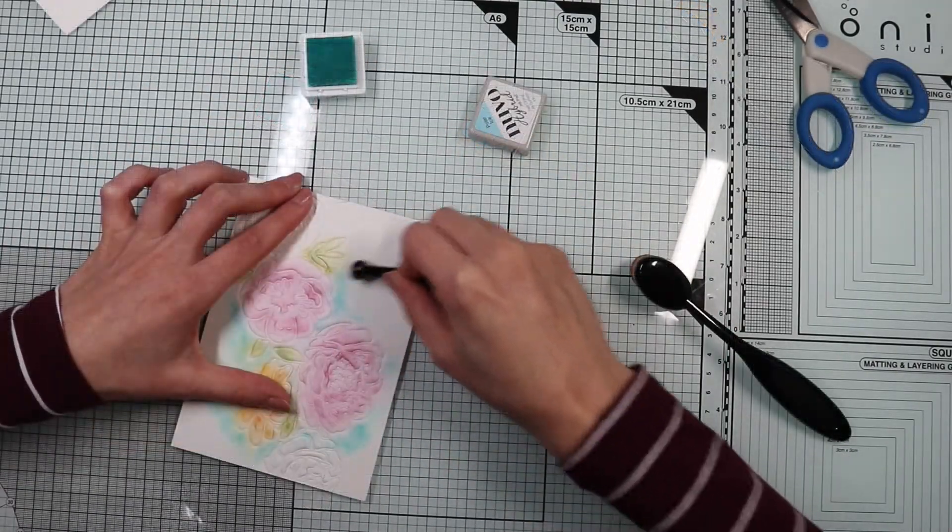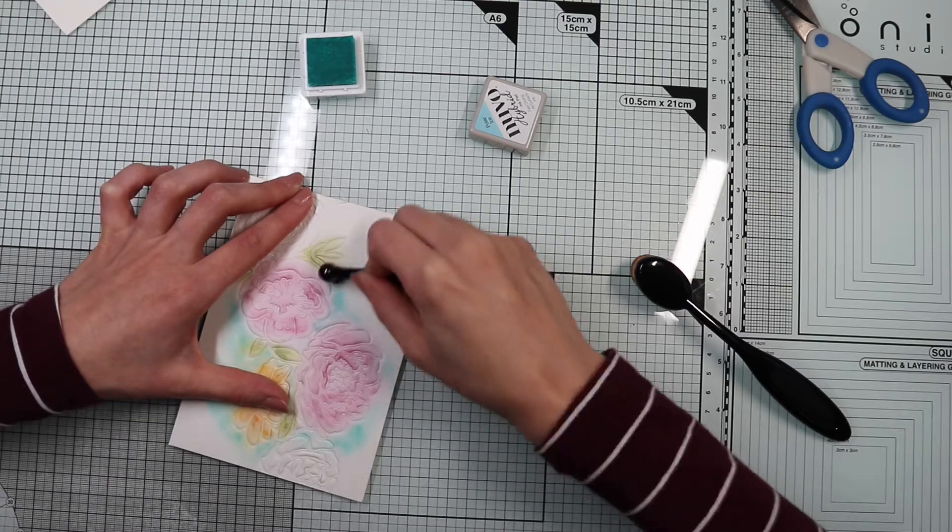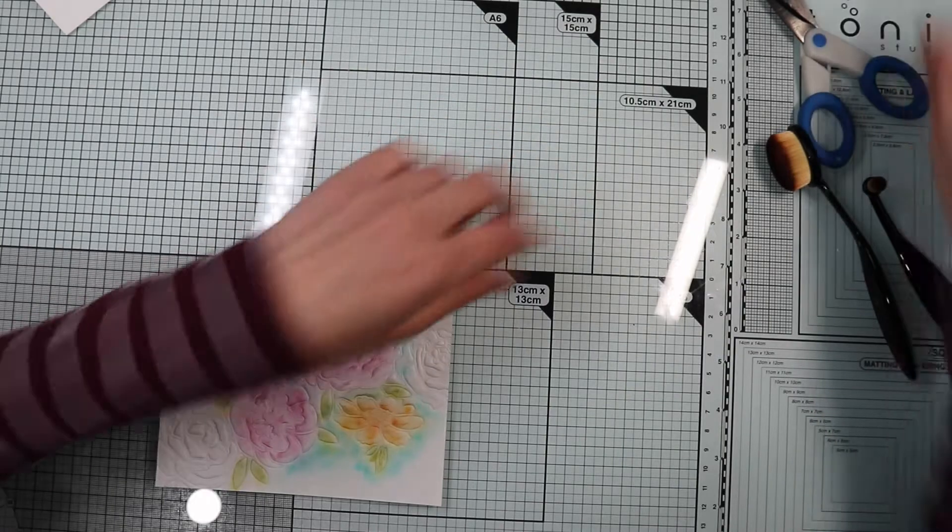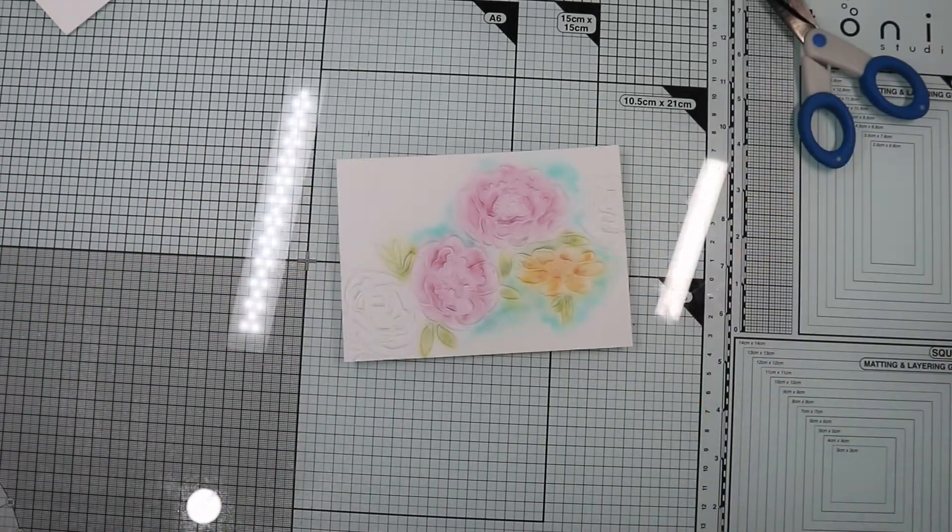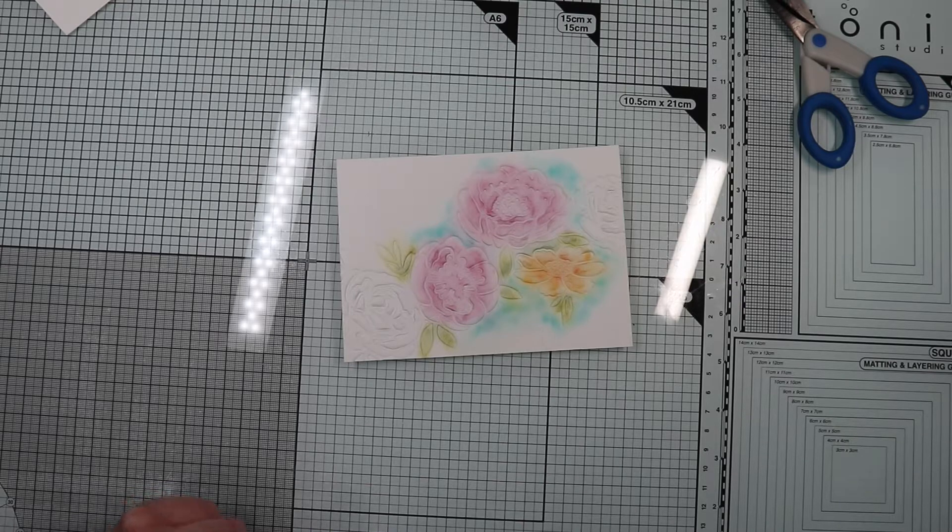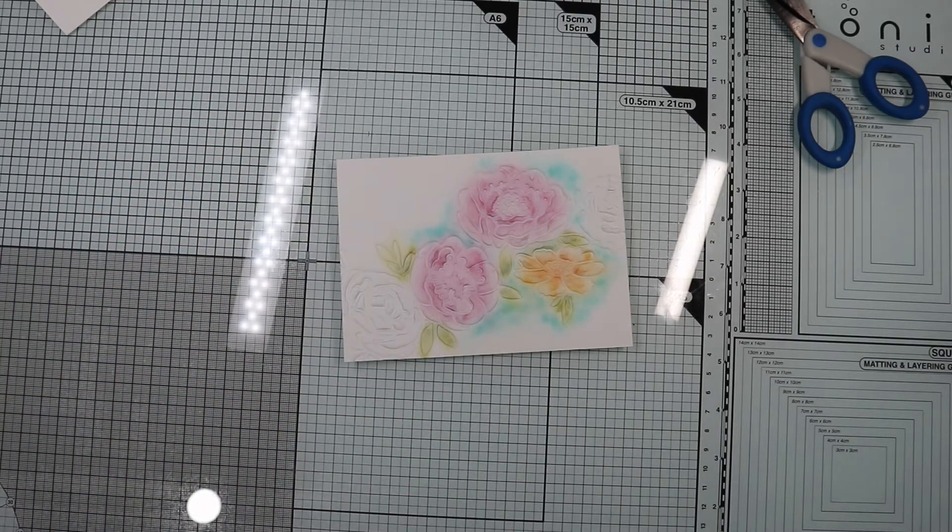Once the coloring is complete, pay no attention to the fact that it is partial and I went off the edges. In fact, for my card, I use only the colored part, which will be framed by a frame. Let's proceed in order.